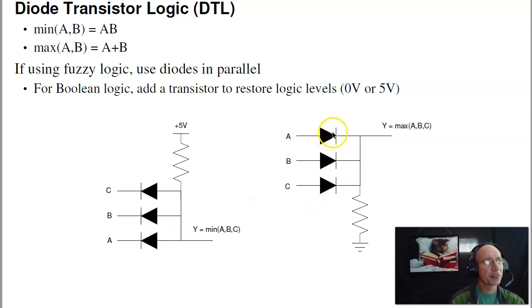In contrast, if I want to find the maximum of A, B, and C, I flip the diodes. Max is like OR. The output is 5 volts if A is 5 volts, or B, or C.